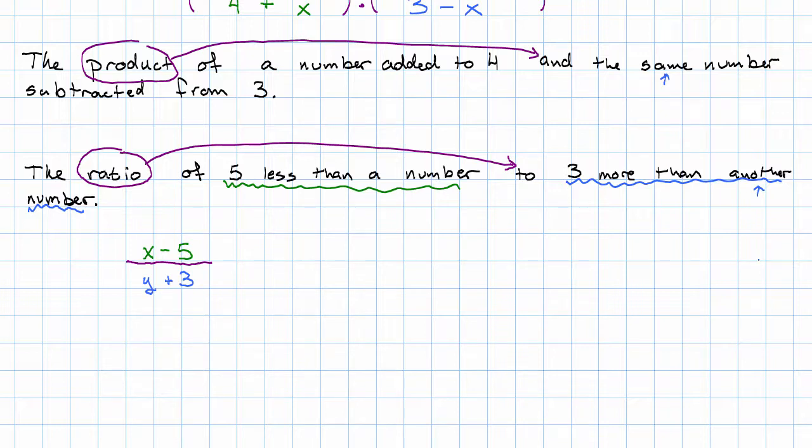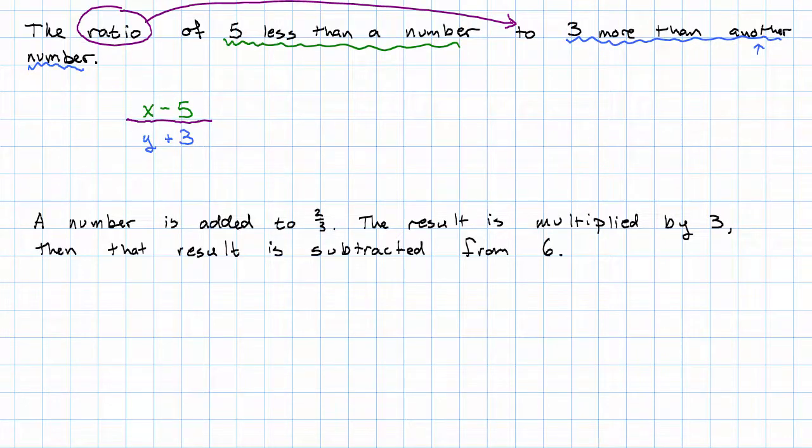Let's say you were given a narrative describing an expression and asked to write the expression down. Here we're told a number is added to two thirds. The result is multiplied by three. Then that result is subtracted from six. So this is a story, right? It's got all these verbs in it, fairly boring verbs, but still. And several sentences and it forms a story.